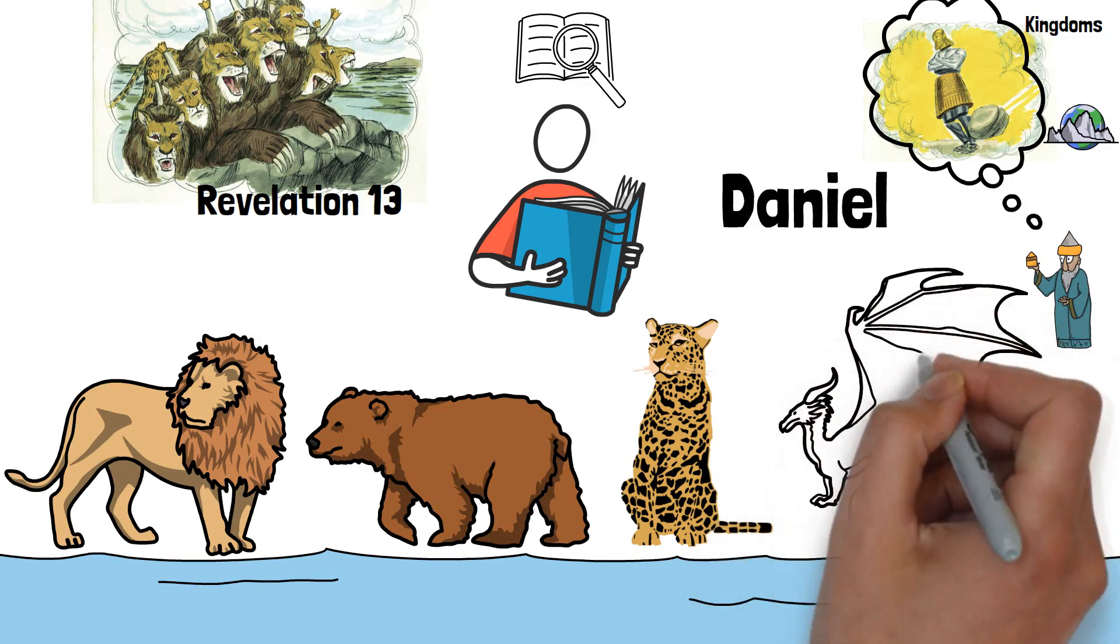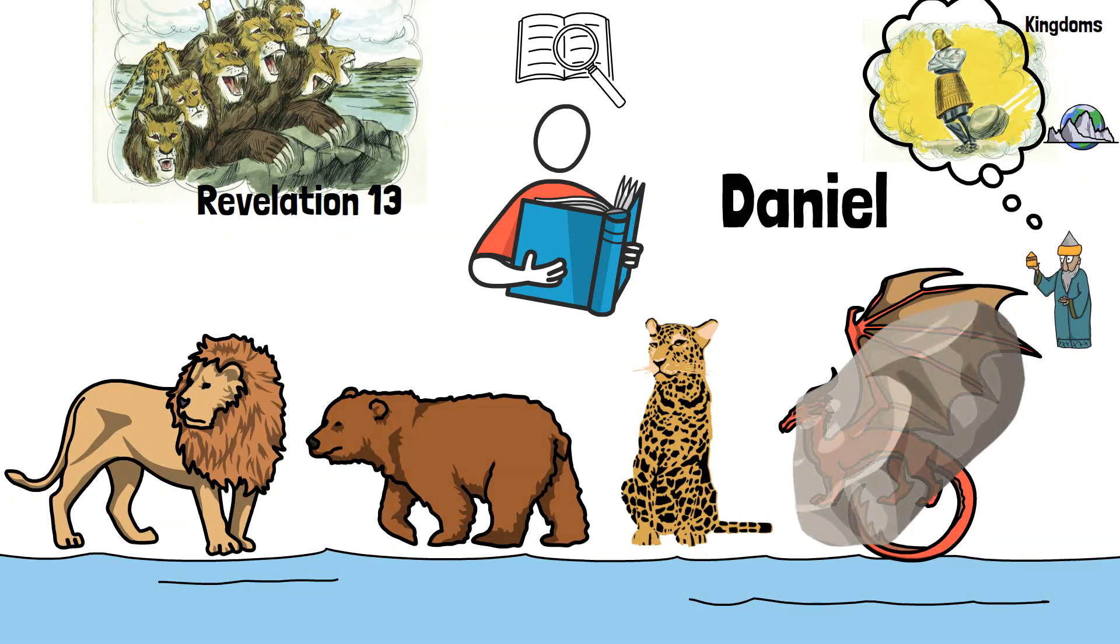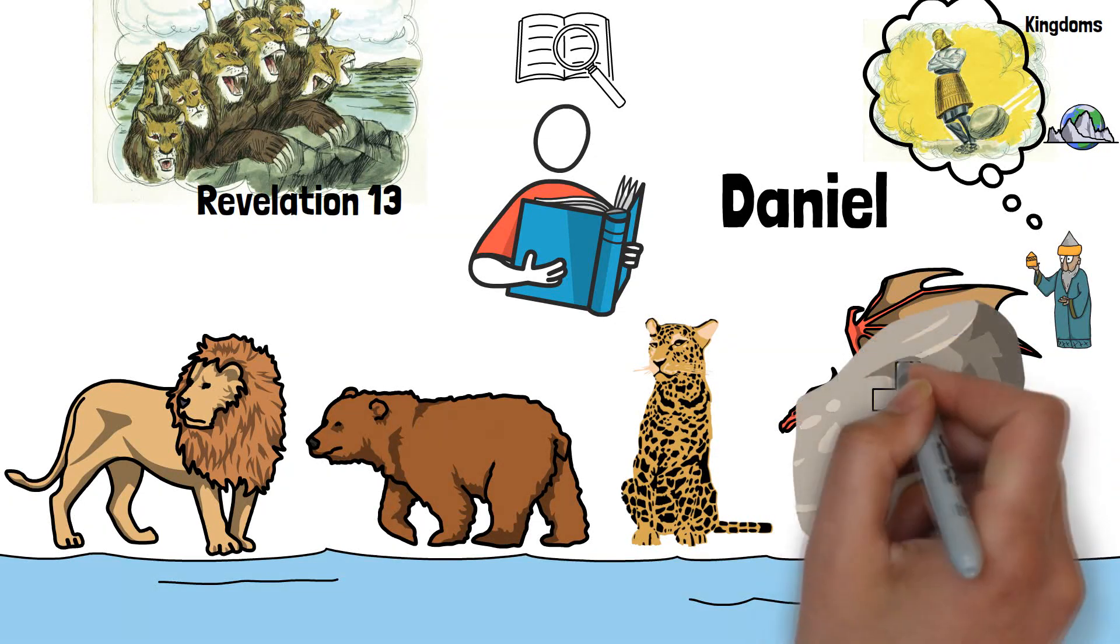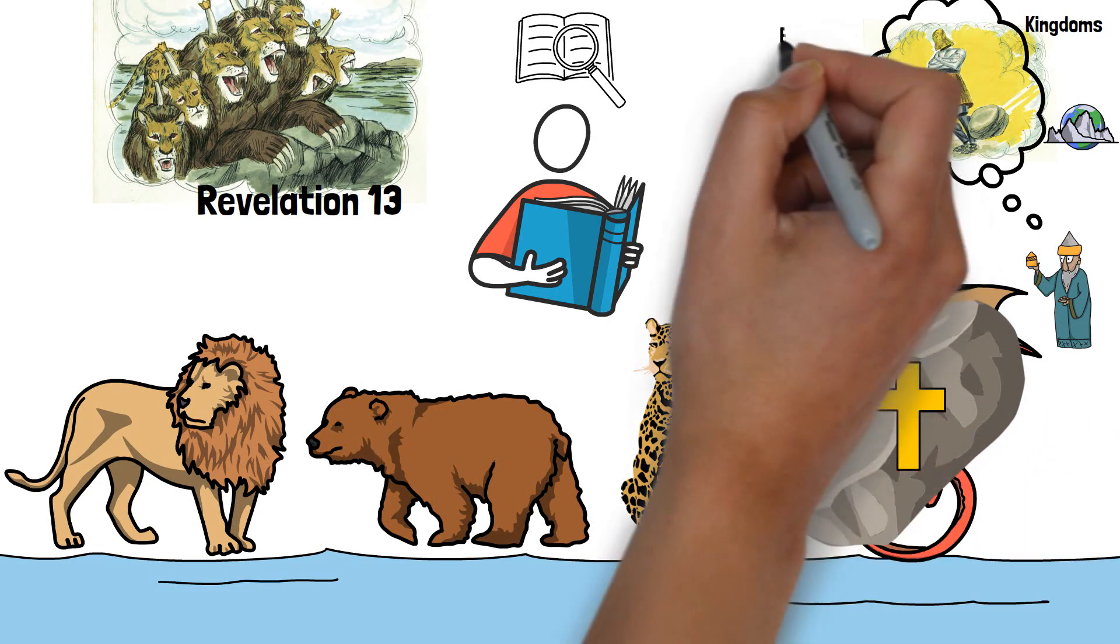In the same way, the four beasts of Daniel's own dream correspond to the same events found in the statue, with the final aspect of the fourth kingdom being the one defeated by Christ, the rock in Nebuchadnezzar's dream, with Christ and his people ruling over the entire earth afterward.